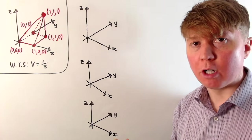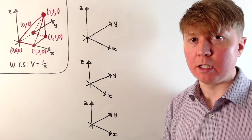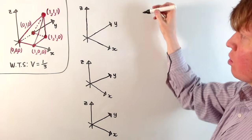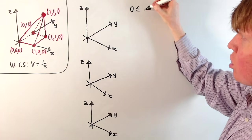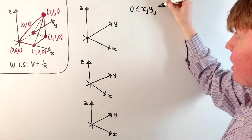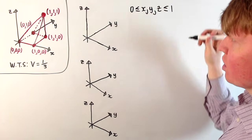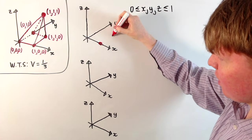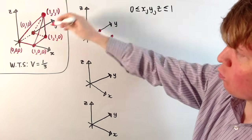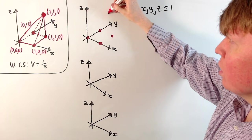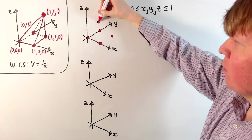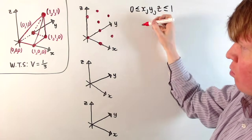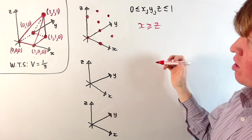Now we're going to try and characterise this region using some inequalities, and we're actually going to think of this region as being a fraction of the unit cube that it lies in. The unit cube we could describe as all the points where the x, y, and z coordinates are between 0 and 1. So we'll look at an inequality where x is greater than or equal to z — let's think about what this would do.